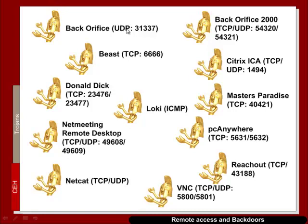Some typical programs that use remote access or backdoor functionality include valid programs such as PCAnywhere, which uses ports 5631 and 5632; VNC, which allows remote desktop on ports 5800 and 5801; Netcat, which can also be used for remote access; NetMeeting remote desktop; and Citrix, which allows remote access and typically uses port 1494.